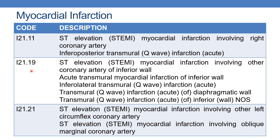The next code is I21.19 — STEMI involving other coronary artery of inferior wall. Synonymous terms include: acute transmural myocardial infarction of inferior wall NOS, inferolateral transmural infarction, transmural infarction of diaphragmatic wall, and transmural infarction of inferior wall. Whenever the physician documents any of these terms, code I21.19.